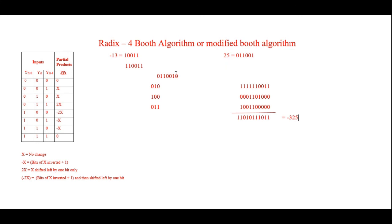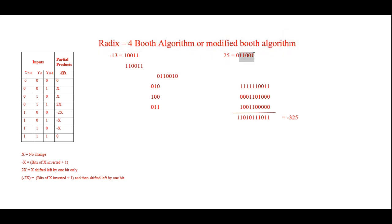This completes the multiplication using the Radix-4 Modified Booth algorithm. The advantage of this technique is that both numbers had 6 bits, so a conventional method would have produced six rows of partial products. Using this method, the rows are reduced by half to three, saving calculation time. I hope you were able to understand this — if you have any queries, post them in the comment section. Thank you for watching.